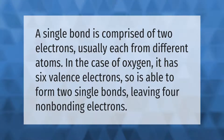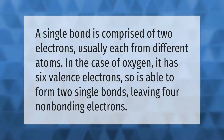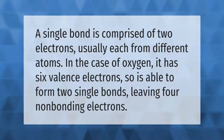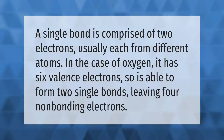A single bond is comprised of two electrons, usually each from different atoms. In the case of oxygen, it has six valence electrons, so is able to form two single bonds, leaving four non-bonding electrons.